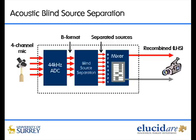Having separated all 8 channels, we shall now recombine them all. This mix signal is sent to the video recorder's left-hand channel. Using a series of switches, we can select which sources are to be recombined and which are not. The resultant selectively filtered audio is sent to the video recorder's right-hand channel.